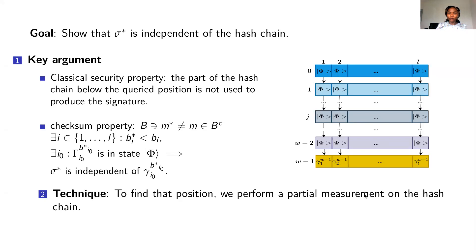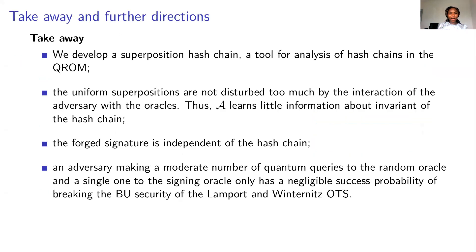As a summary of our work: we developed a superposition hash chain, a tool for analyzing hash chains in the quantum random oracle model, and used it as a key ingredient in our analysis. We were also able to show that the interaction of the adversary with both oracles — the random oracle and the signing oracle — does not disturb too much the uniform superpositions of the hash chain, meaning the adversary learns only little information about the invariant part of the hash chain. This implies that the forged signature is independent of the hash chain. In conclusion, an adversary making a moderate number of quantum queries to the random oracle and a single query to the signing oracle has only negligible success probability in breaking the security of the Winternitz signature scheme.